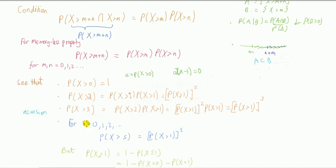So you can see that for, let's say, use a different letter now, s, 0, 1, 2, and so on, that if we want to find probability x is bigger than this number s, it's just probability x bigger than 1 raised to the power s.